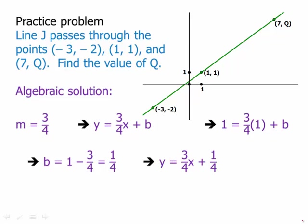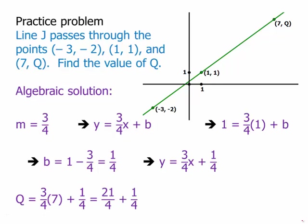Now I'm just going to plug in 7 for x and q for y, multiply everything out, and what I get is 22/4. Simplifying, that becomes 11/2. So q = 11/2, which I can also write as 5.5. That is a perfectly valid algebraic way to solve the problem.